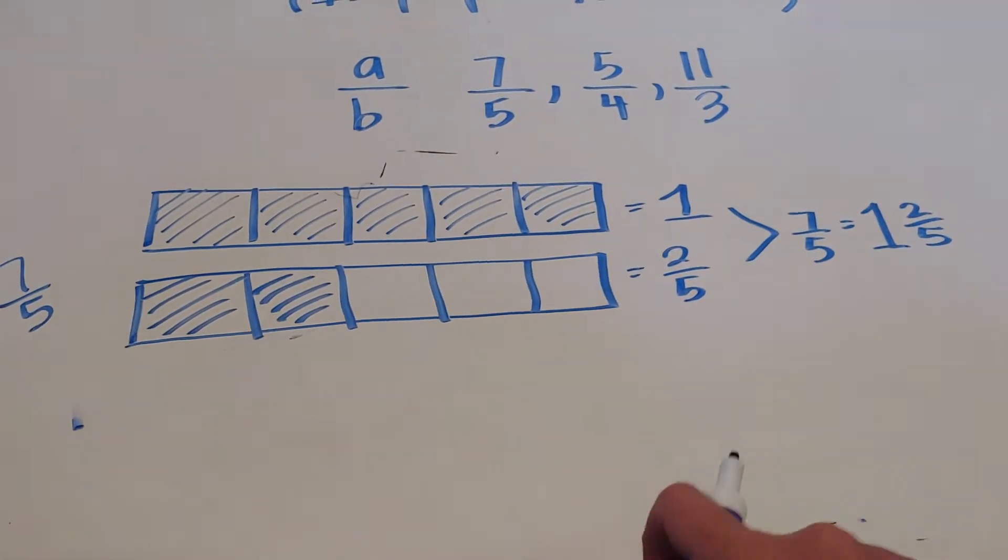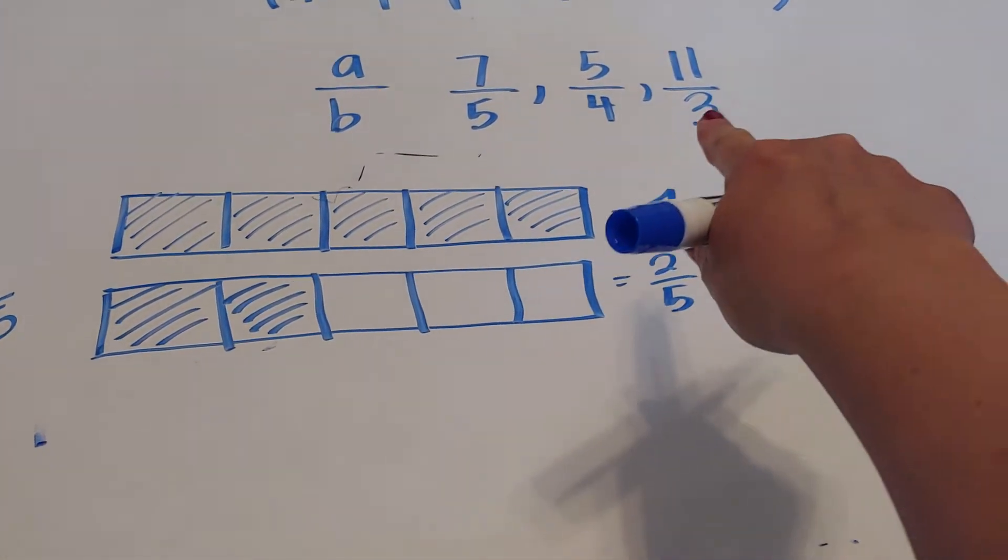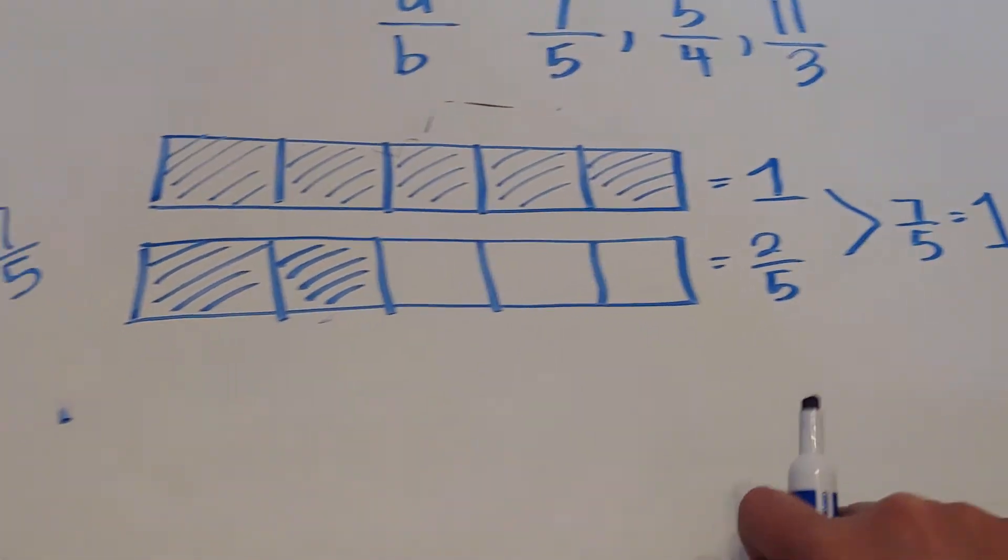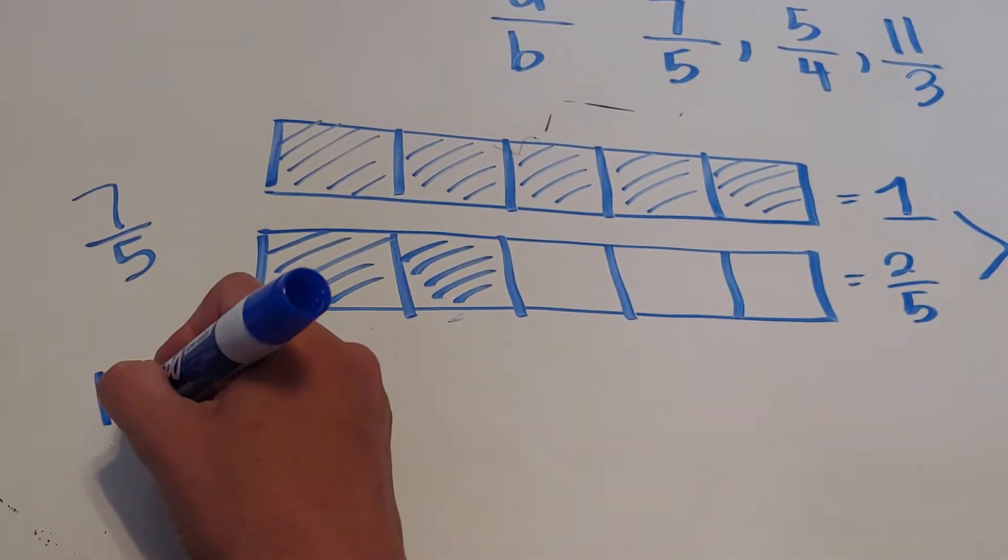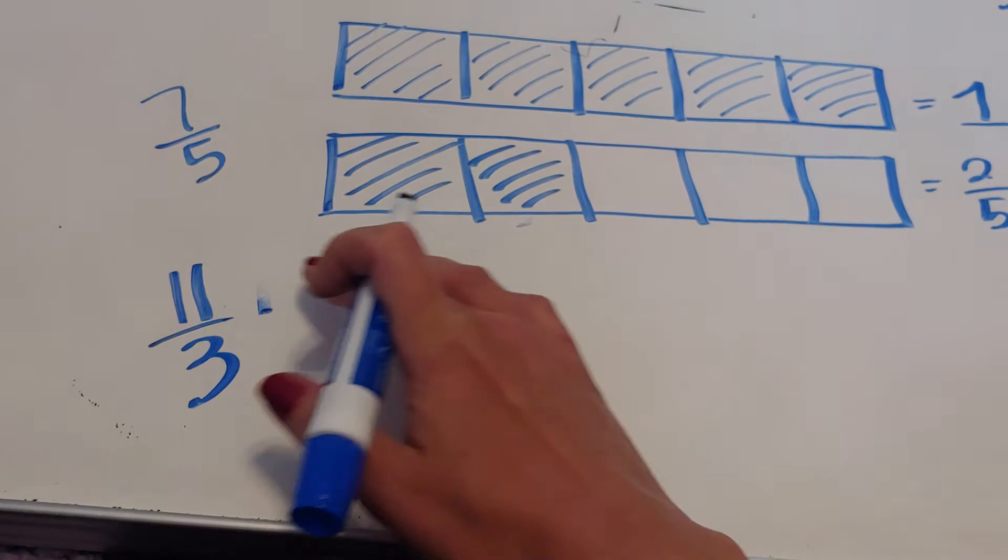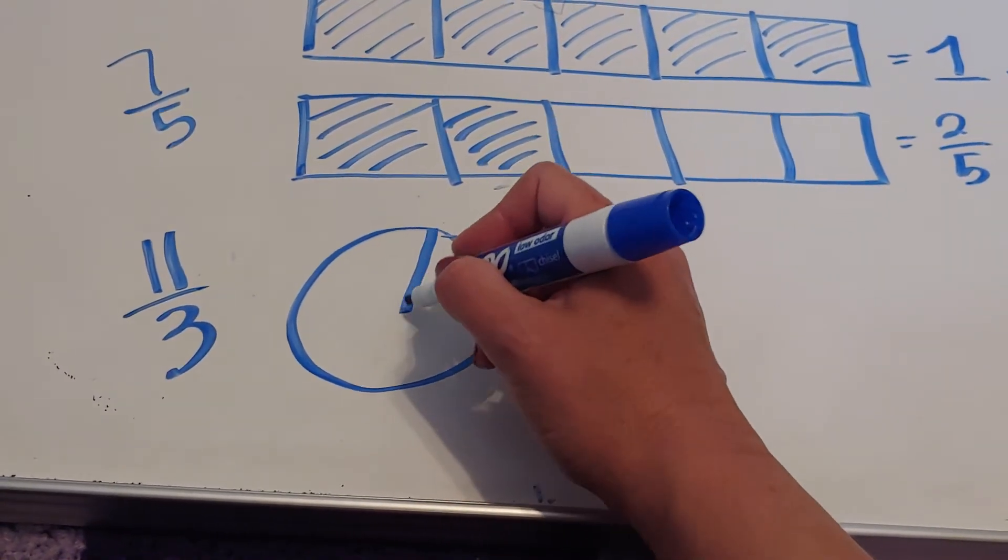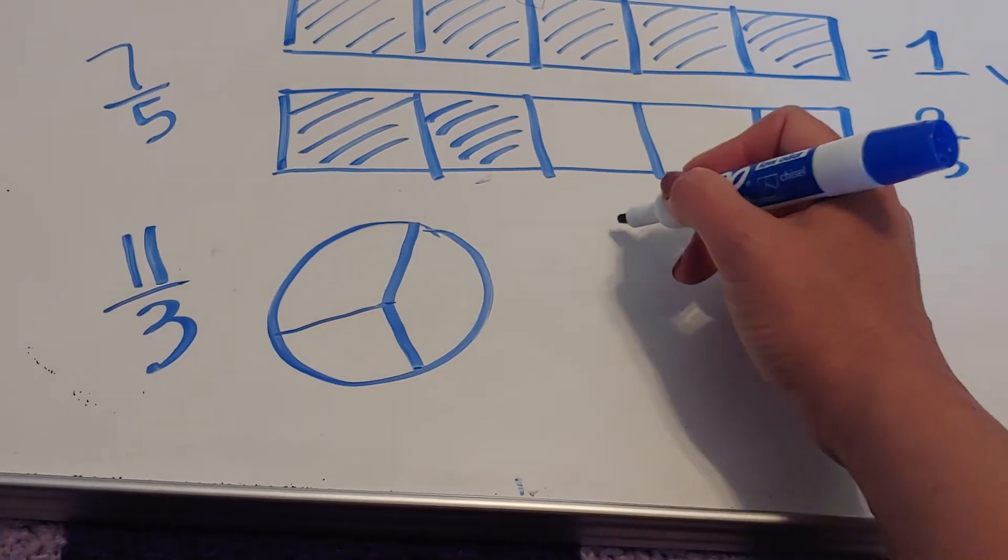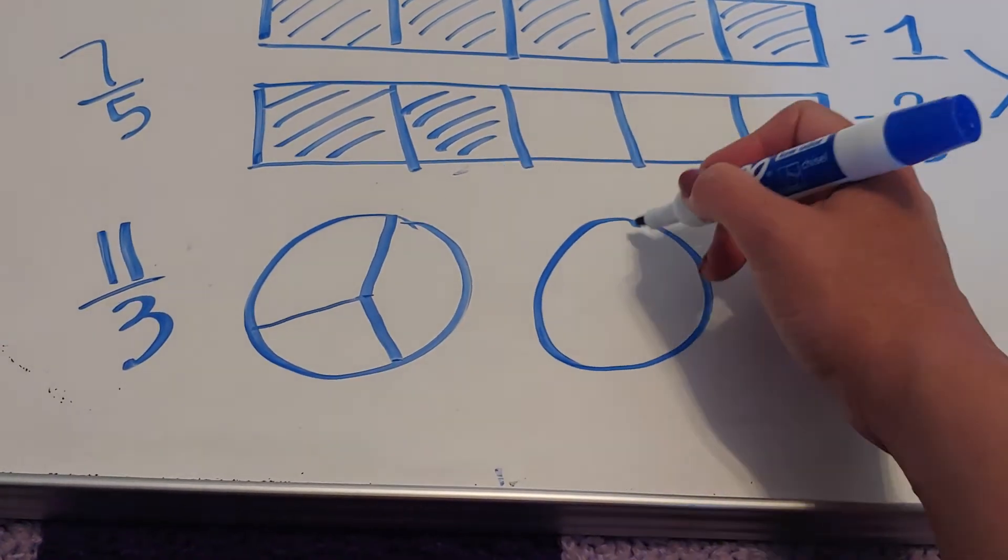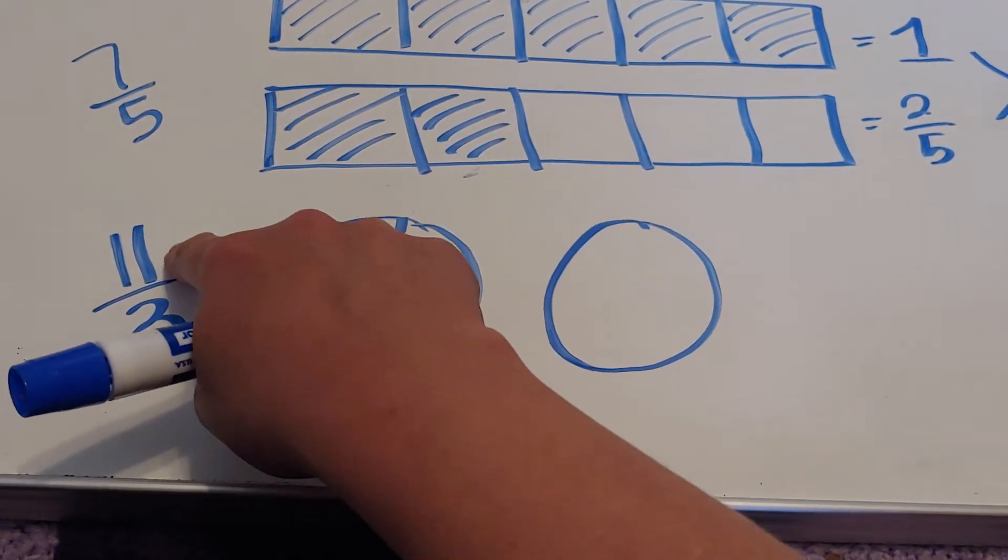See what I'm saying? It's pretty cool, right? So let's try it with 11 thirds. All right, so if I did 11 thirds, I need a shape, any shape that I want. So let's say maybe you're a fan of circles. So this has to be in 3 equal parts.